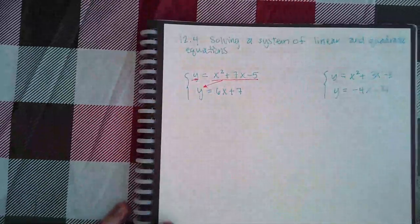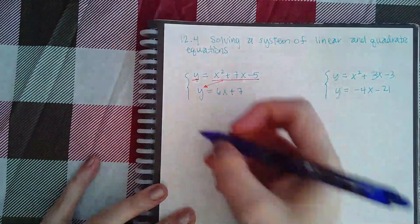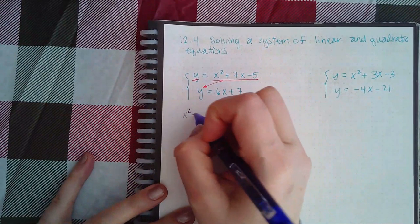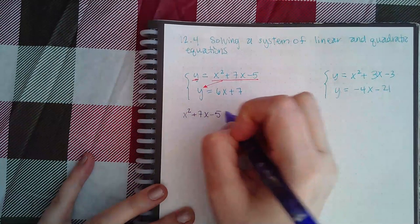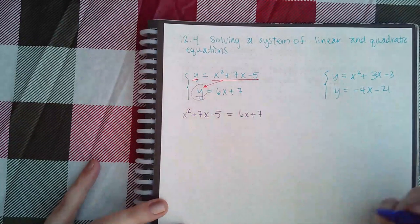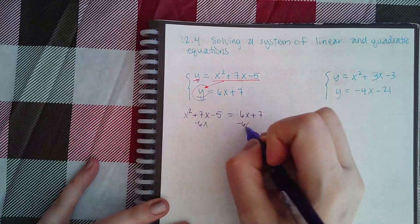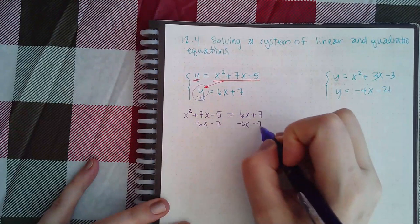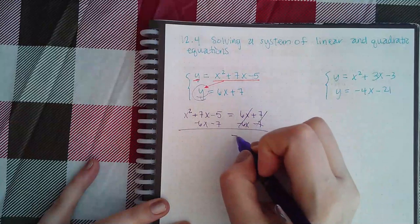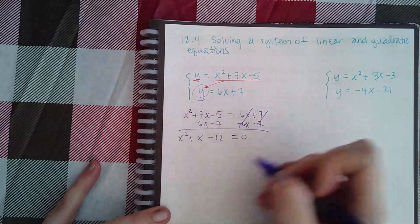The new equation, basically combining these two together, will become x²+7x-5, which is what we had for y, equal to 6x+7. Then it's a quadratic, so I would try to get all the terms over to one side and then solve the resulting quadratic equation.